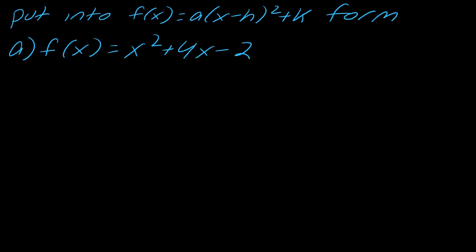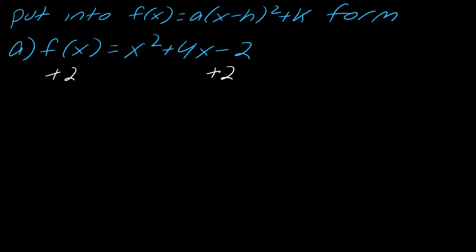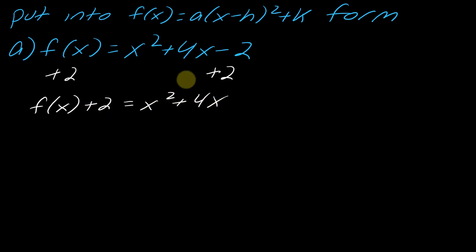Now let's do one together. I'm going to walk through an example with you. Notice in this one I don't have a leading coefficient other than one — they have the correct leading coefficient. So I want to walk you through this simplified case. The first thing you need to do is isolate the x terms, so first we need to add two to each side.